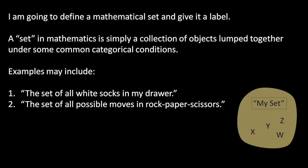We begin by simply defining a mathematical set. Remember that in mathematical language, a set is nothing more than a collection of objects — maybe real, maybe imaginary — as determined by some made-up definitions. So for example, one possible set might simply be the set of all white socks in my drawer, and that would be a perfectly valid set. Another simple example could be the set of all possible moves in rock, paper, scissors. And again, that's a perfectly reasonable set.